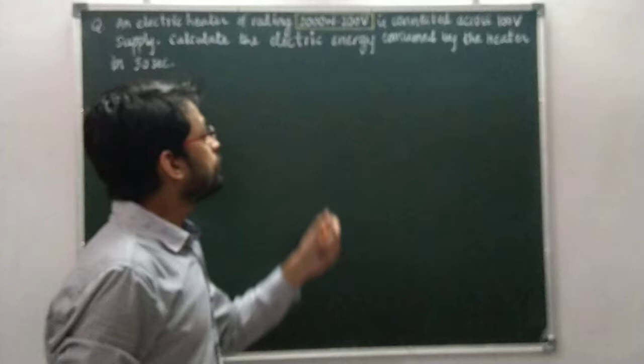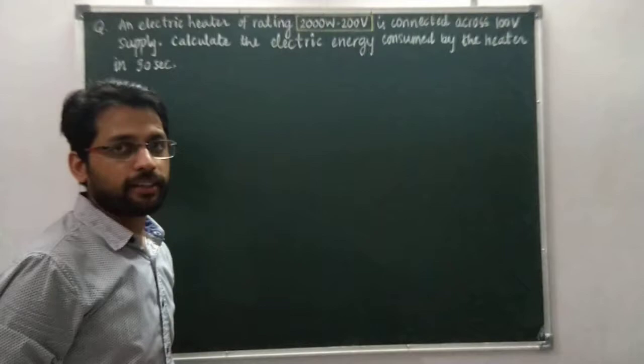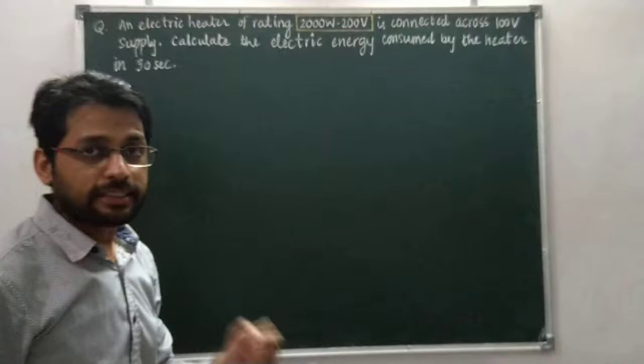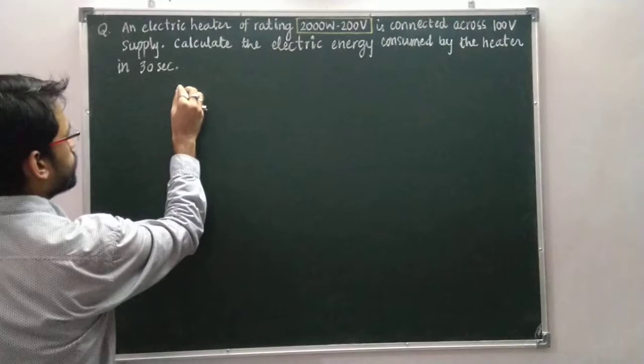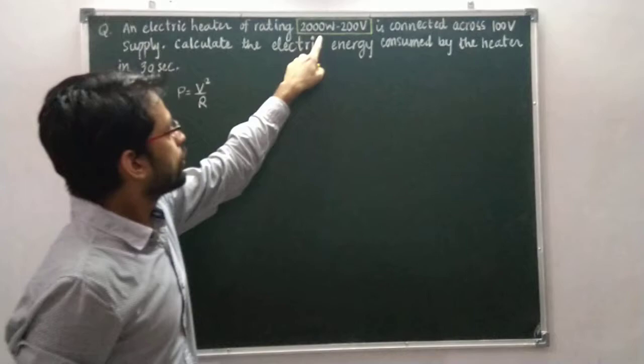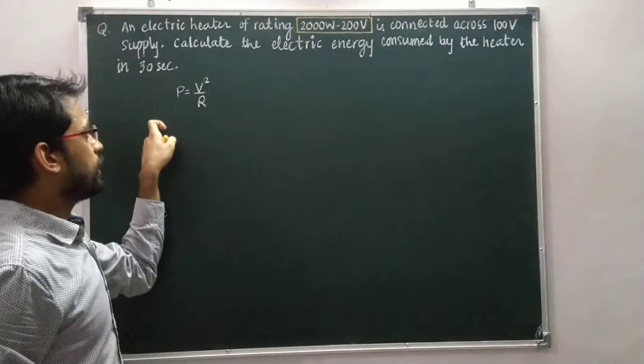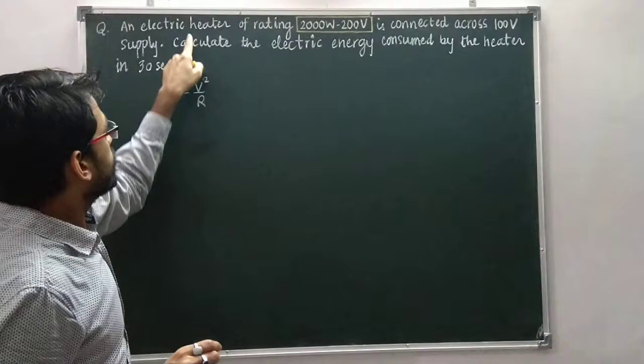To solve this question, we have to calculate the resistance of the electrical heater first. We have the power rating of the electrical heater. We know that power is equal to V squared by R, where P is the power and V is the voltage mentioned in the power rating.